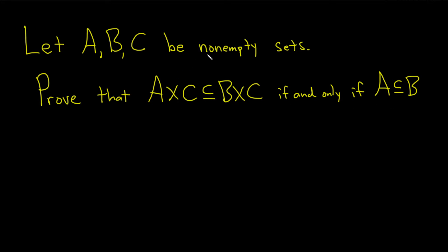So this is the Cartesian product. If you have A cross B, this is the set of all ordered pairs of the form A comma B such that A is in A and B is in B.